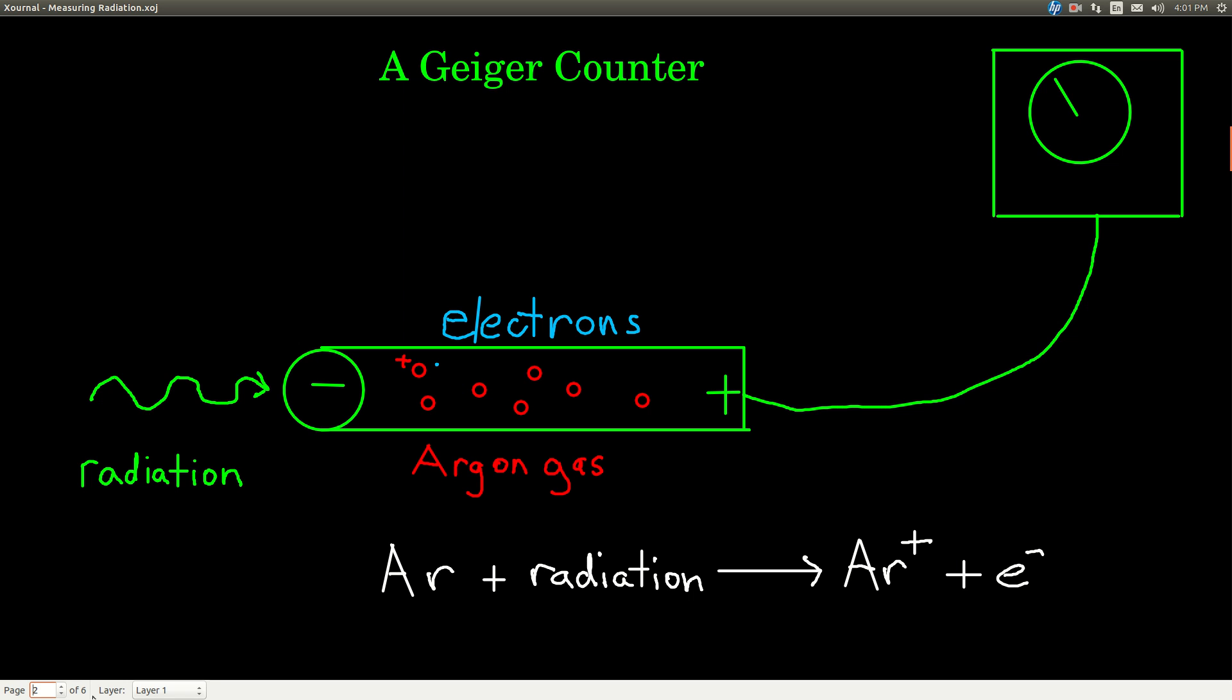It has a tube filled with a gas, maybe argon gas, and it has a covered opening so the gas can't escape, but something that radiation can pass through easily. And when that radiation passes through and hits these atoms of argon gas, or whatever the gas is,